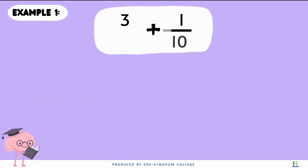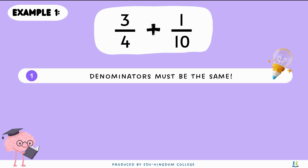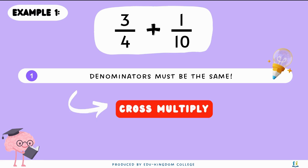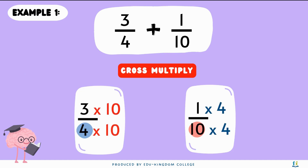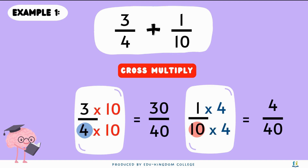With these three steps in mind, let's try an example. Example one: three quarters plus one over ten. The first step is that denominators must be the same. In order to make the denominators the same we need to do something called cross-multiplying, which is when you times the opposite denominator by its own numerator and denominator. In this case we do three times ten over four times ten, and one times four over ten times four, which gives us thirty over forty and four over forty.